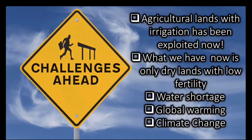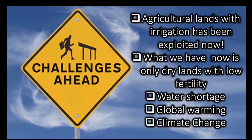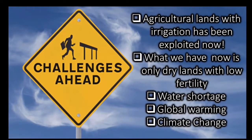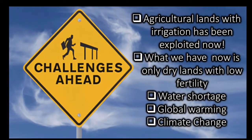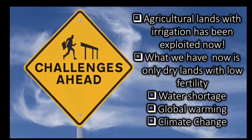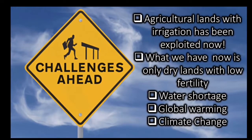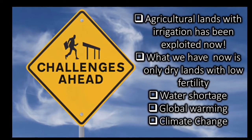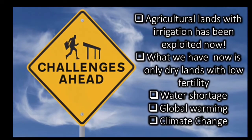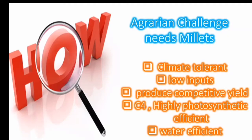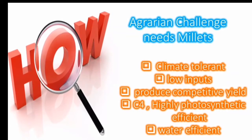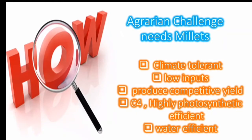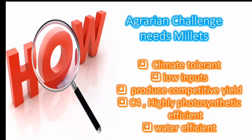The challenges an agriculturist, an agronomist, and a farmer are facing in the coming era: agricultural lands with irrigation have been exploited. What remains are only dry lands with low fertility, water shortage, global warming and climate change. This agrarian challenge needs millets — crops which are climate tolerant and produce competitive yield with low inputs.